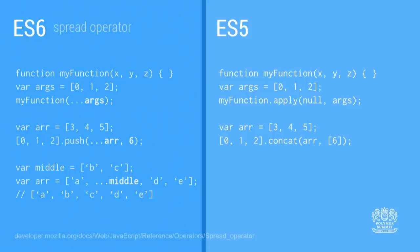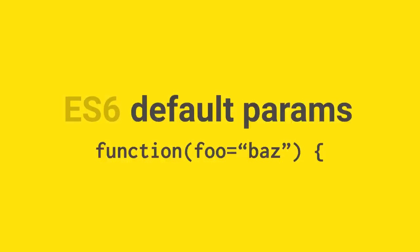You can also use the spread operator anywhere that multiple arguments are supported. For example, with the array push method, if you want to concatenate arrays it's really easy using the spread operator. And lastly, you can use this in array literals as well. So if you want to create an array from A through E, you can do that really easily using the spread operator right inside of the array literal.